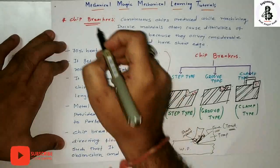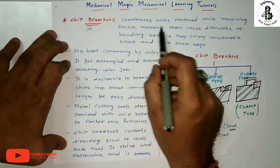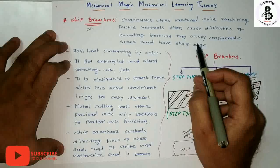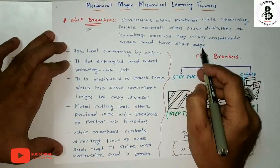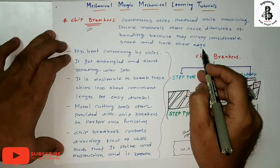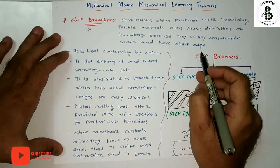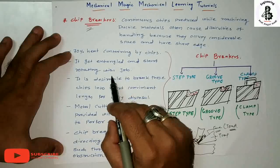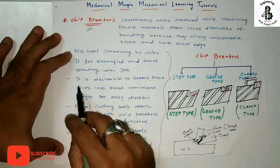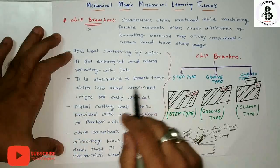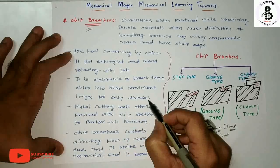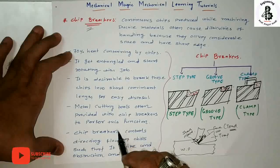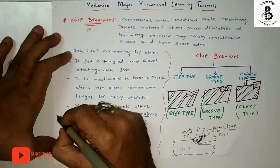So this new topic is called chip breakers. Continuous chips produced while machining ductile materials often cause difficulties and handling problems because they occupy considerable space as well as have sharp edges. That will sometimes cause damage to the machines, tools, as well as the surface finishing of the workpiece materials. The chips contain about 70 percent of the heat, and that will damage the internal parts of the machine as well as the tool and workpiece. So it is desirable to break these chips into short convenient lengths for easy disposal, and metal cutting tools are often provided with chip breakers to perform this function, which is an important part of tool design.